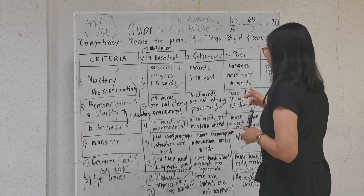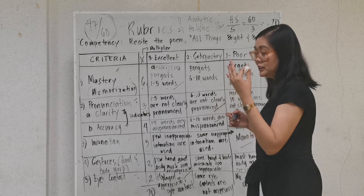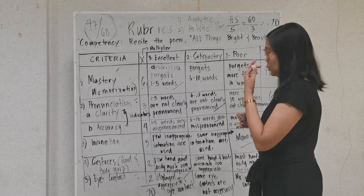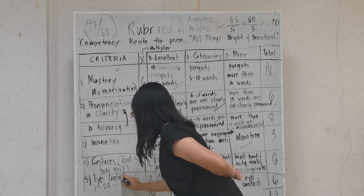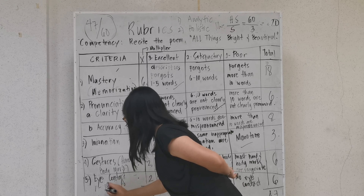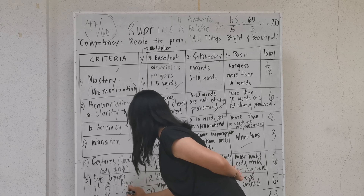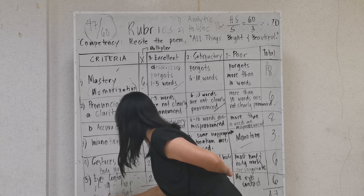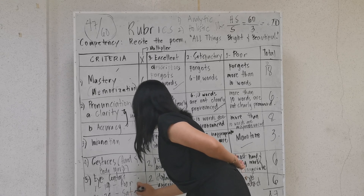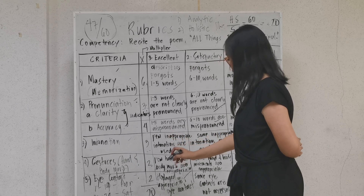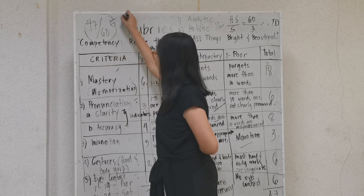To interpret the score: divide the total (60) by 3 levels, giving 20 points per range. So: 1–19 is poor, 20–39 is satisfactory, and 40–60 is excellent. Since Juan scored 47, he falls in the excellent range. That is how you construct and score an analytic rubric.